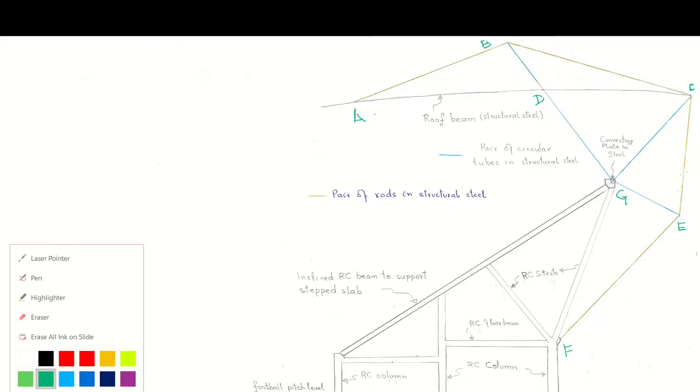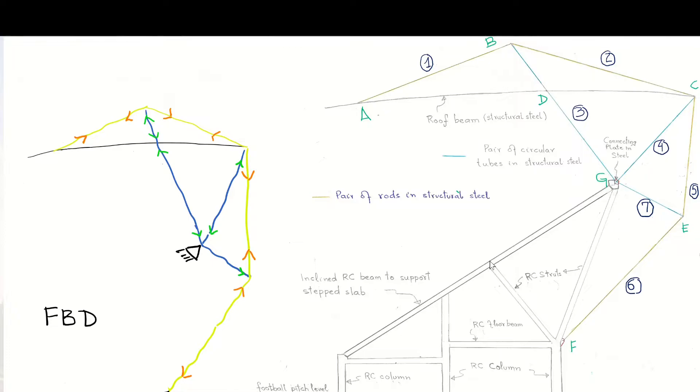Let me draw the free body diagram of this sub-assembly of the structural system. Let me change the color of the drawing tool. This is the roof beam. My labeling is now complete. You can see on the left side I have drawn a free body diagram of the sub-assembly of roof.